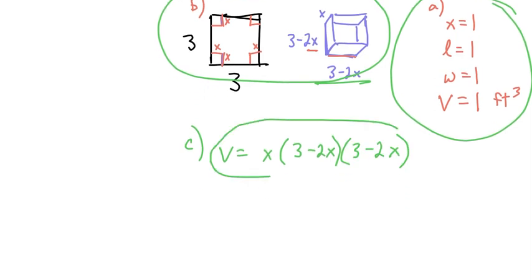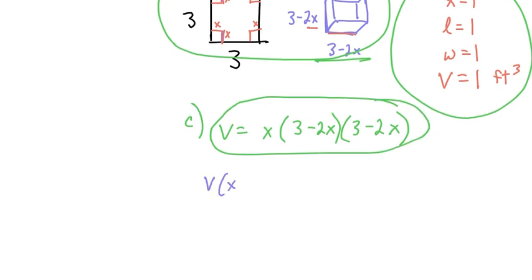And then we can, at least what I would do, since this is a calculus problem, is distribute. 3 times 3 would be 9, multiplied by that x.